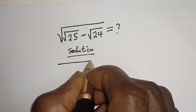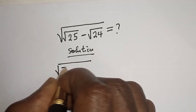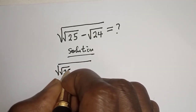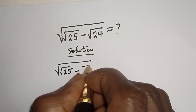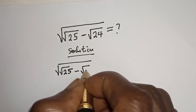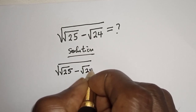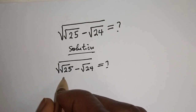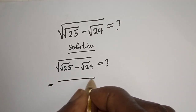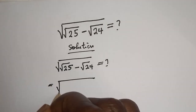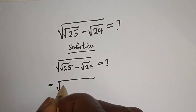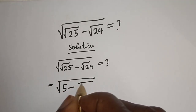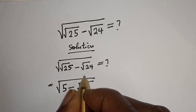We have square root of square root of 25 minus square root of 24. This is equal to square root of — square root of 25 is 5 — minus square root of 24.